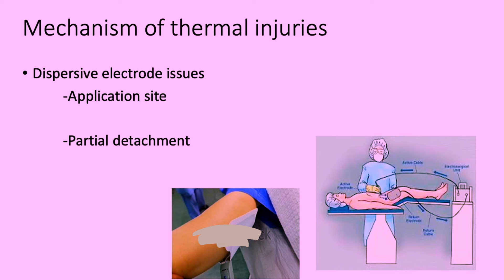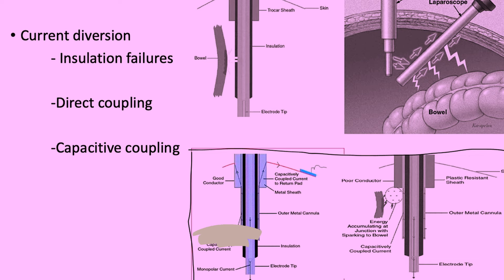Current diversion can occur — for example, insulation failures. Frequent and continuous use of high voltage can create cracks in insulation, allowing the current to injure nearby vital organs.